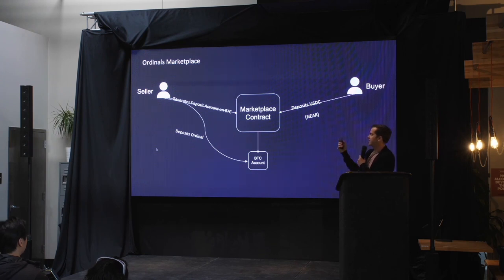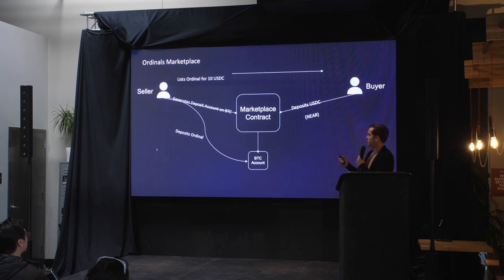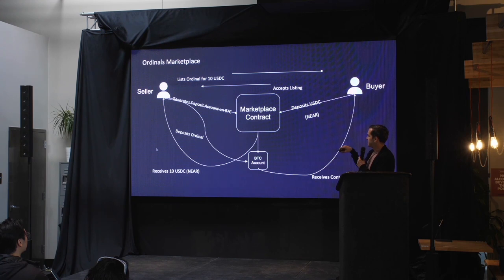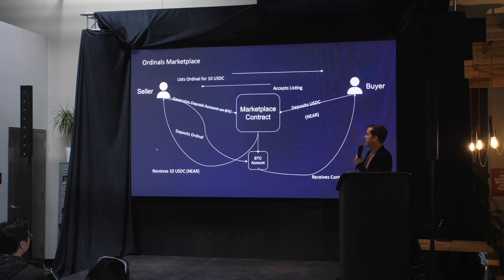This design is important because it prevents the seller from rug-pulling a potential buyer — if they have an open order, they can't just withdraw because they don't control the account; they have to ask the marketplace contract to allow the withdrawal. So say the ordinal is listed for 10 USDC and the buyer accepts. The right to withdraw the ordinal transfers from seller to buyer — the buyer can now ask the marketplace contract to send that ordinal to their Bitcoin account, while the seller can withdraw the 10 USDC the buyer deposited.